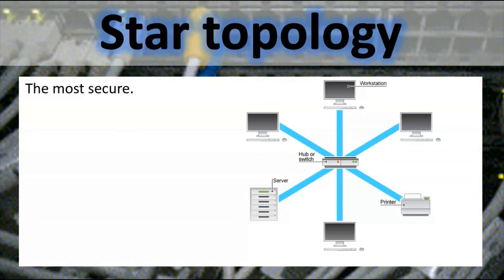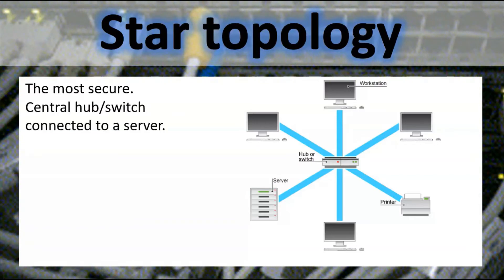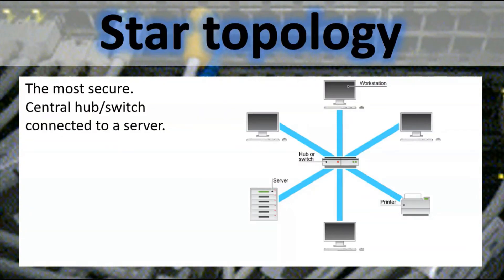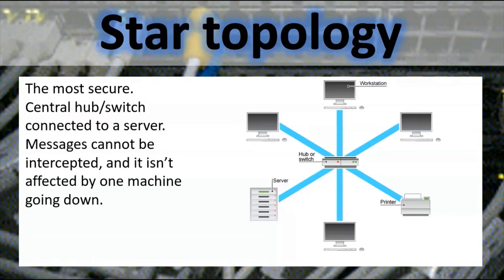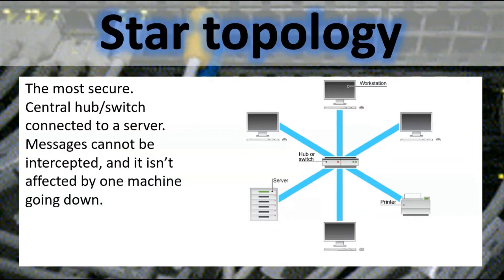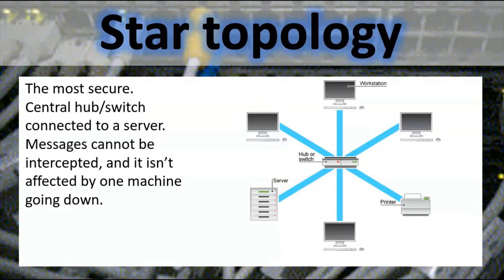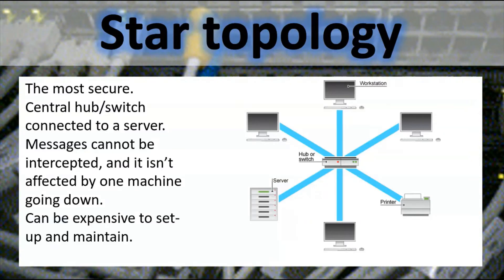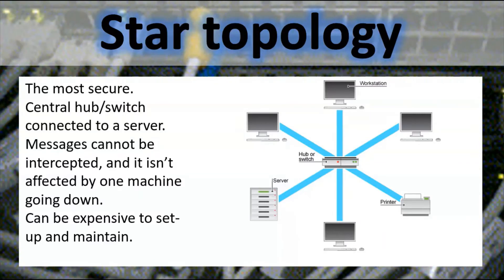Star topology is the most secure, with a central hub or switch connected to a server. Messages cannot be intercepted and the network is not affected by one machine going down. However, it can be expensive to set up and maintain.